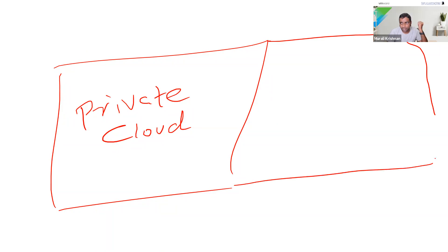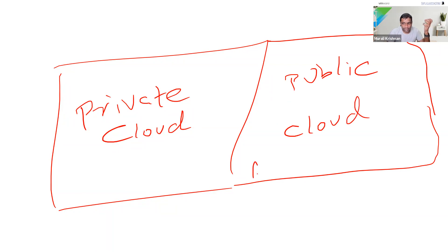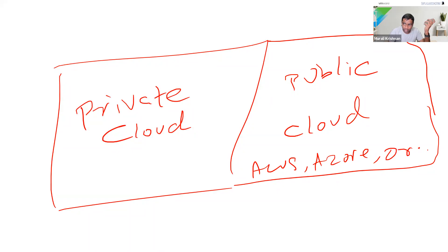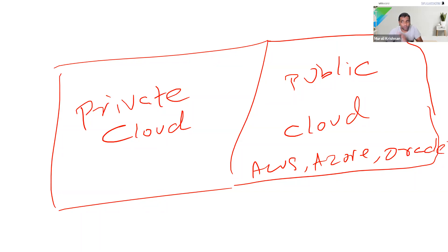Public cloud — you might know the names I just mentioned: AWS, Azure, Oracle, IBM. They are called public cloud. These companies set up infrastructure and let everyone use it — pay per use and so on. Those are the two major things: private cloud and public cloud.